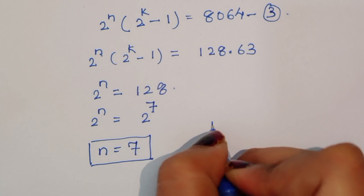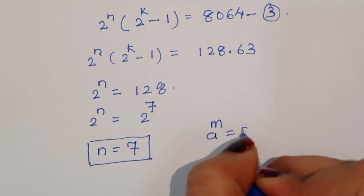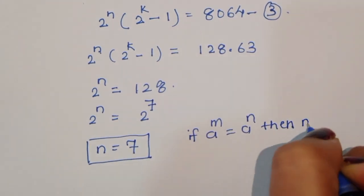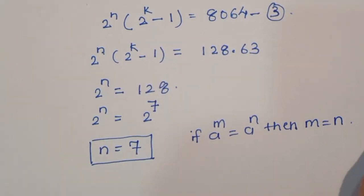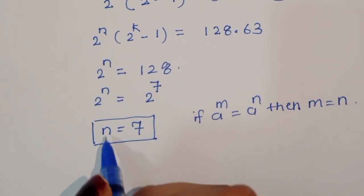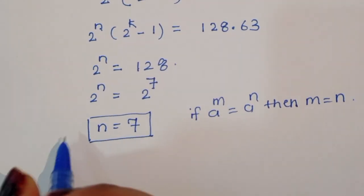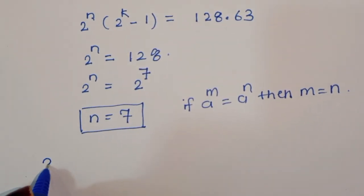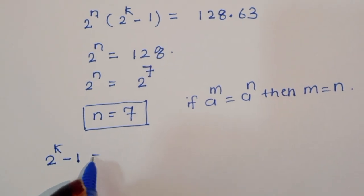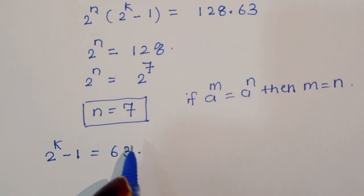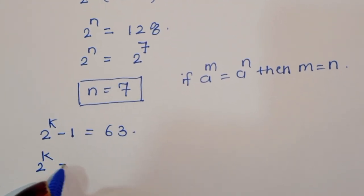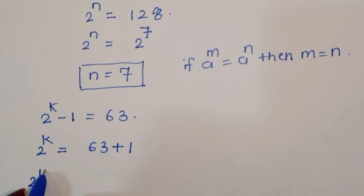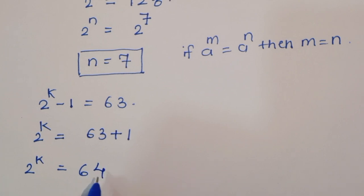Using the formula: if a power m equals a power n, then m equals n. So n is equal to 7 — this is the value of n. Now for the second factor: 2 power k minus 1 is equal to 63, so 2 power k is equal to 63 plus 1, which is 64.